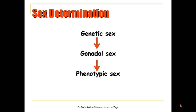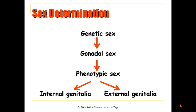The phenotypic sex is determined by hormones secreted from the developing gonad. If the developing gonadal sex is testes, then the hormone will be testosterone. It will affect both the internal structures to develop into the male duct system and the external genitalia to develop into the male form. If the developed gonad is ovaries, then there is no testosterone, and both the internal and external genitalia will default towards the female form.